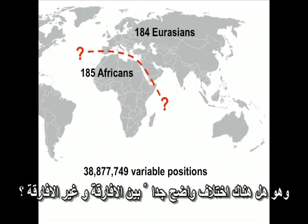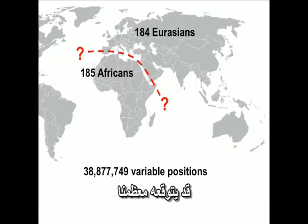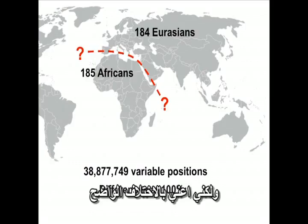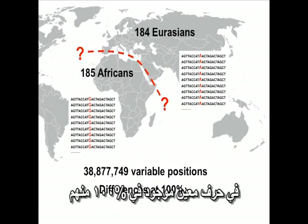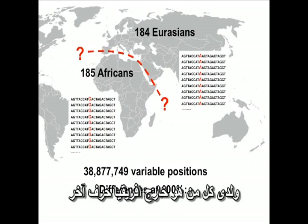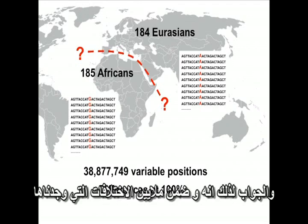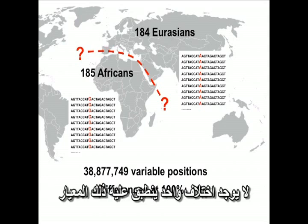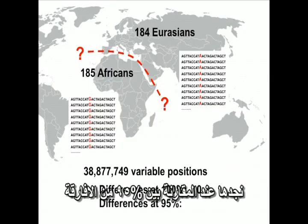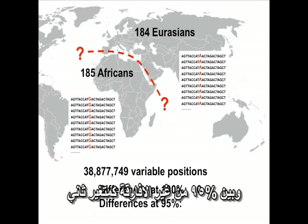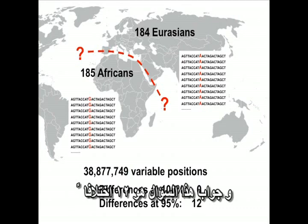We can then ask: are there any absolute differences between Africans and non-Africans — perhaps the biggest difference most of us would imagine existed? By 'absolute difference' I mean a position where all individuals inside Africa, 100%, have one letter, and everybody outside Africa has another letter. Among those millions of differences, there is not a single such position. If we relax the criteria to 95%, the number is only 12.